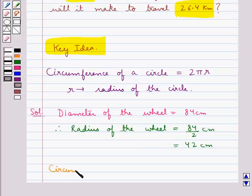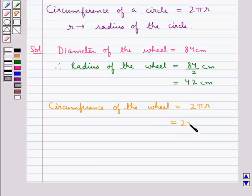Now, the circumference of the wheel is equal to 2πr, that is equal to 2 × 22/7 (the value for π) × 42 cm. Since 7 × 6 is 42, this is equal to 264 cm, the circumference of the wheel.